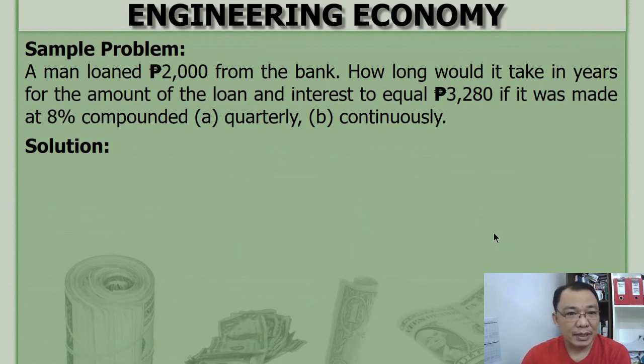Another problem: A man loaned P2,000 from the bank. How long would it take in years for the amount of the loan and interest to equal P3,280 if it was made at 8% compounded quarterly and compounded continuously? So 3,280 is the accumulated amount or future value, amount of loan and interest. You can draw the cash flow diagram. Let x be the number of years. Or you can solve using the formula.